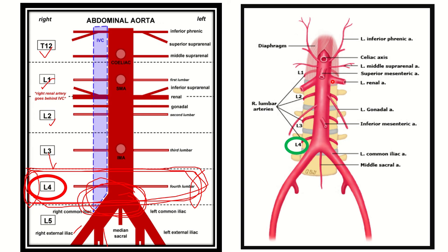We can see different types of branches: nine are paired branches and four are unpaired. The four unpaired branches are the celiac trunk, superior mesenteric artery, inferior mesenteric artery — these are the anterior branches — and the posterior one, the median sacral artery. These are the unpaired branches of the abdominal aorta. There are also nine paired branches.